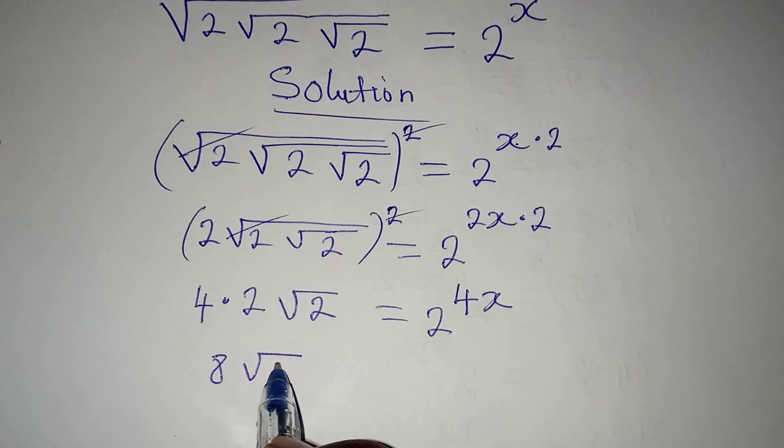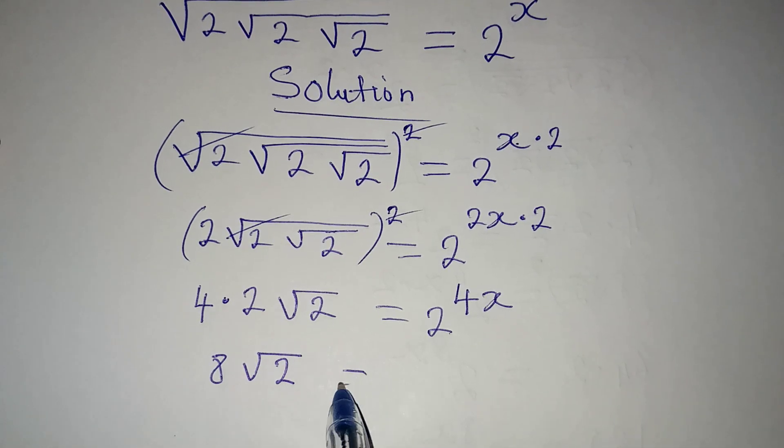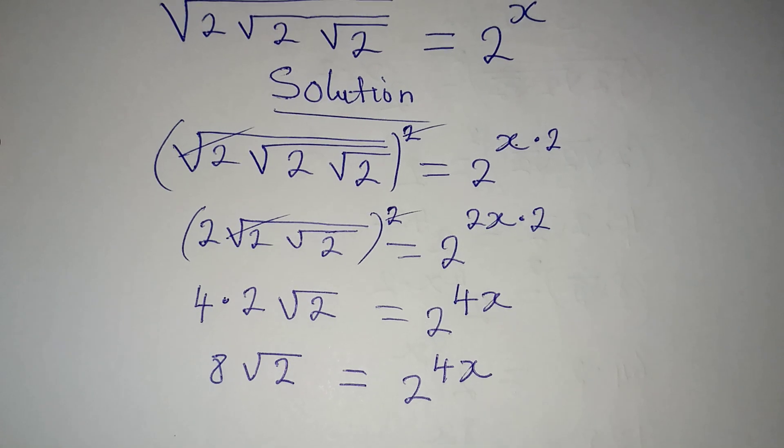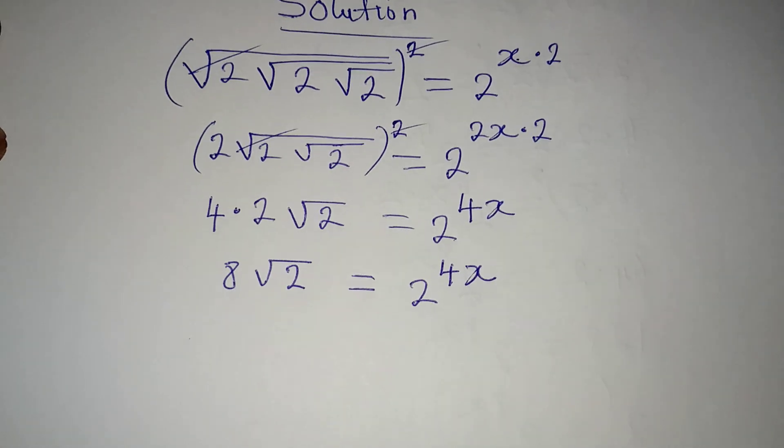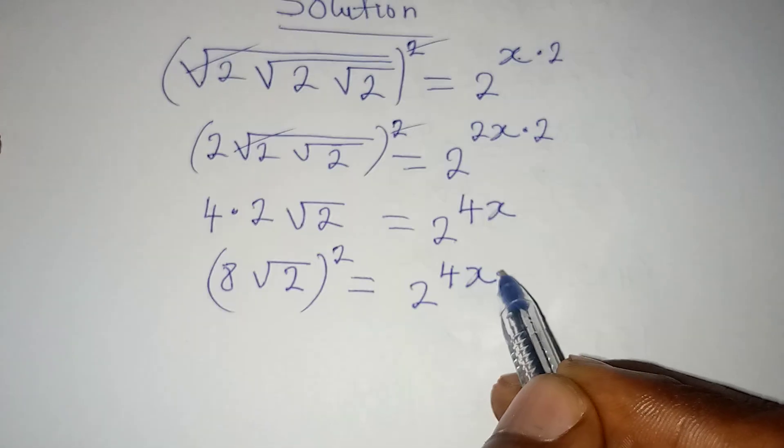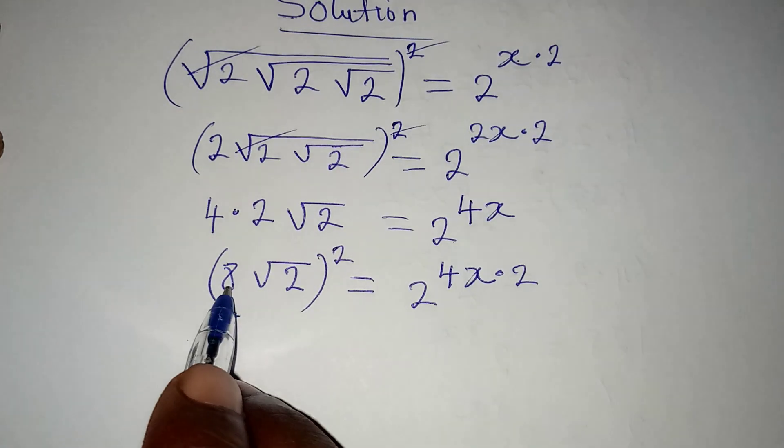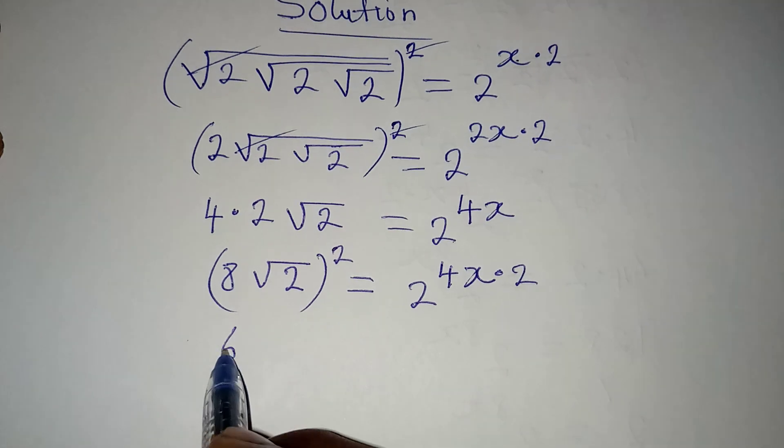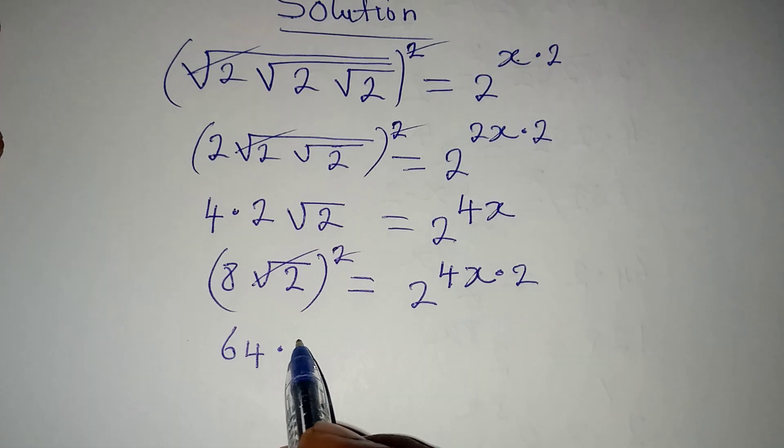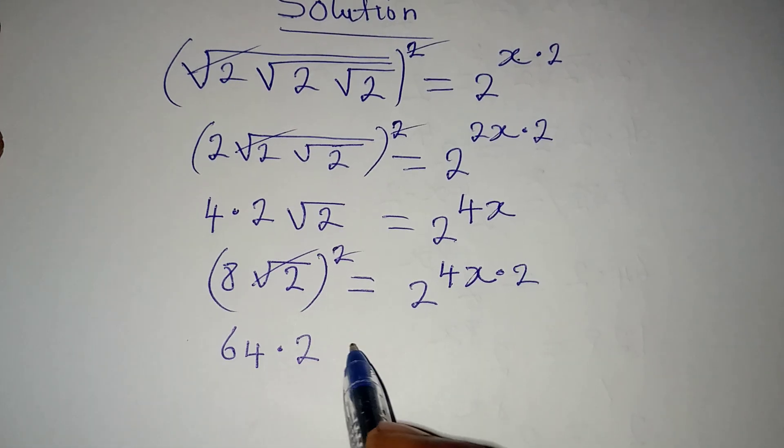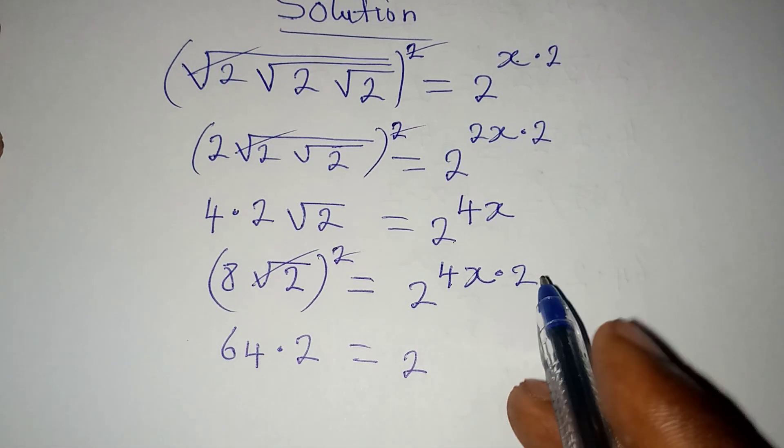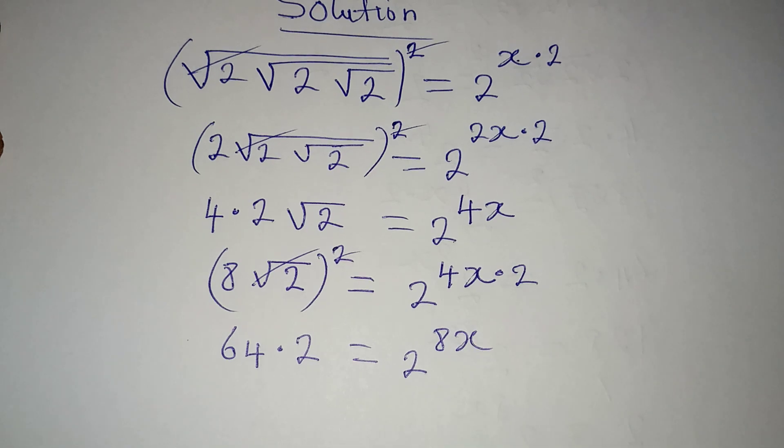Now, the next thing I am going to do is to square this side again, and then multiply the power by 2. 8 squared will give us 64, then this can cancel this, and I will just multiply this by 2, which will now be equal to 2 to the power of 4x times 2, which is equal to 8x.